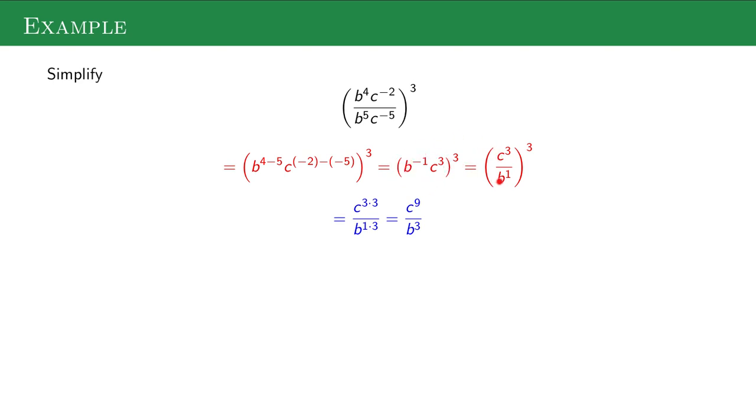All right, b to the negative one wants to jump to the bottom of this division bar. Now I have this fraction raised to the third. This third exponent goes to both of these. So I can multiply three and three and one and three to get my final answer.